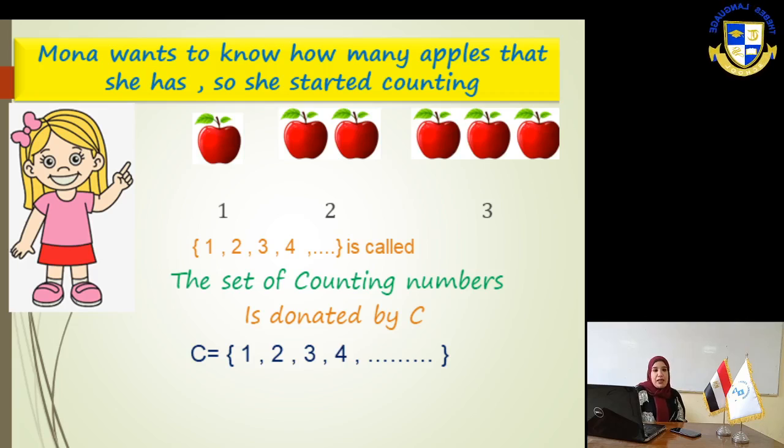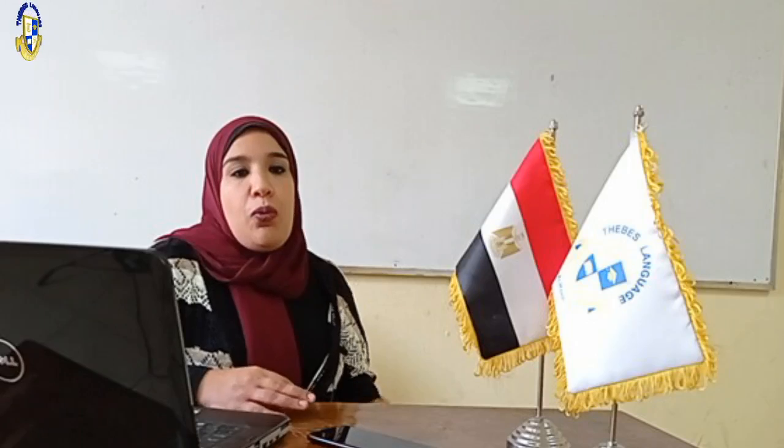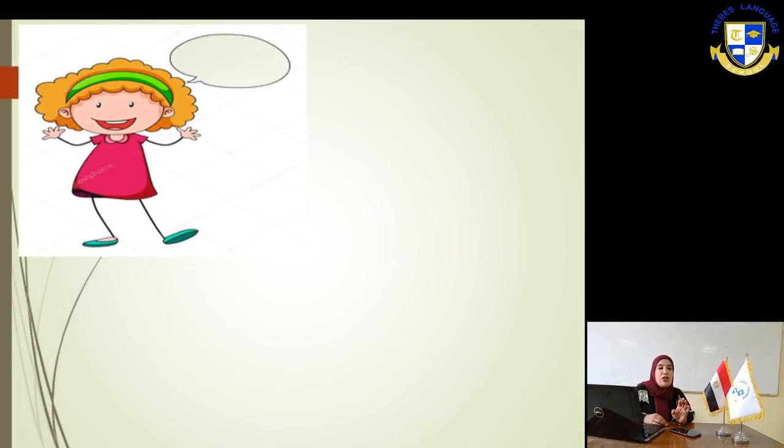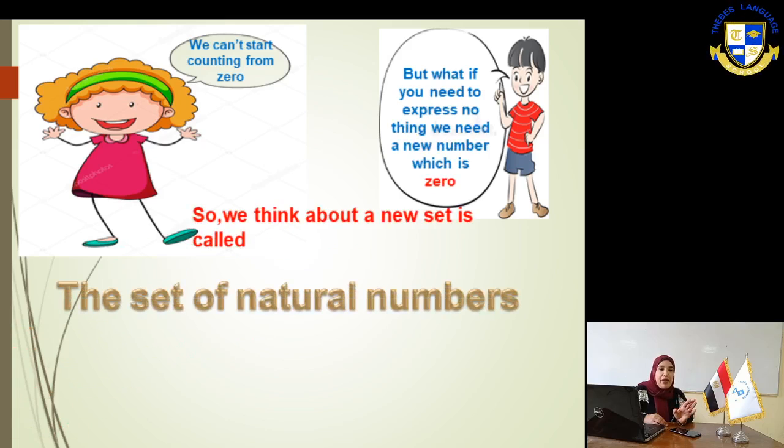But what if I have an empty class, a class without any student? How can we express the number of students inside the class? You will say there is no student inside the class, or the number of students inside the class is 0. So now, if 0 enters the set of counting numbers, you will have a new set. This set is called the set of natural numbers, and it is denoted by the letter N.